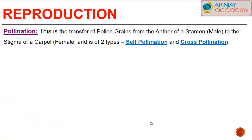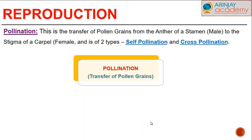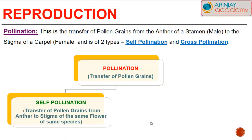Pollination is the transfer of pollen grains from the anther of a stamen to the stigma of a flower, and it is of two types: self and cross. Self-pollination is when pollen grains from an anther are transferred to the stigma of the same flower of the same species.